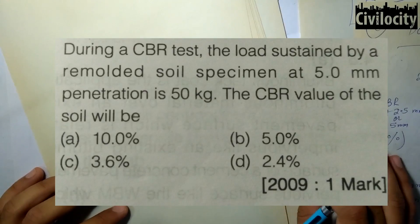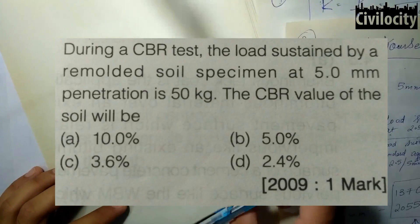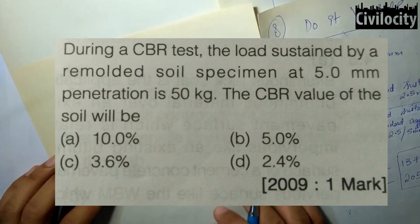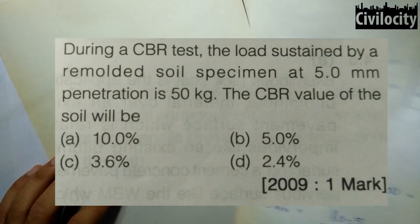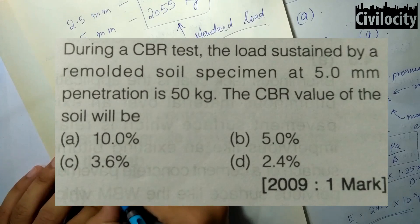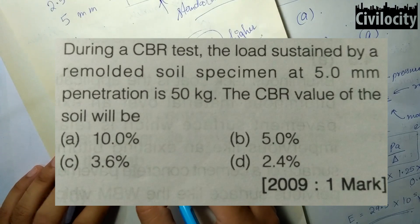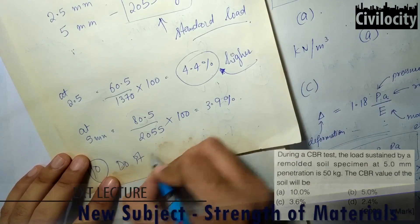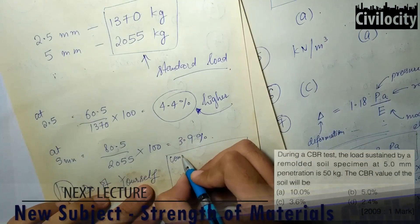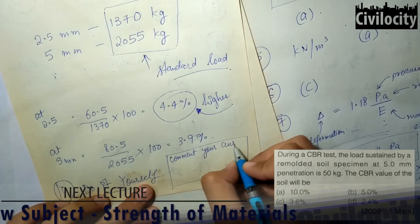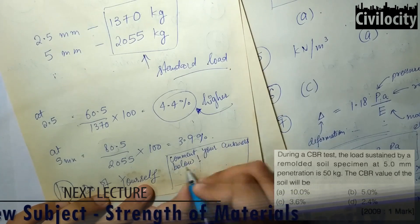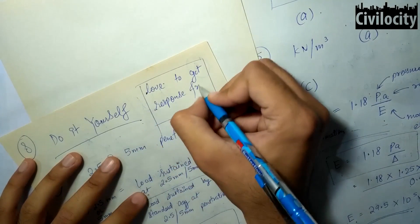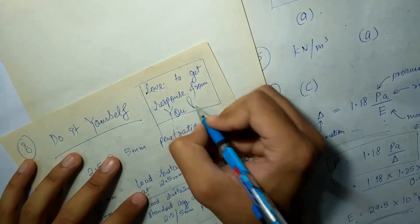The last question: during a CBR test, the load sustained by a remolded soil specimen at 5 mm penetration is 50 kg. The CBR value of the soil is? Please do this question yourself — it is very similar to the one we just solved. Comment your answers below. After this, we will start a new subject of civil engineering. Thank you.